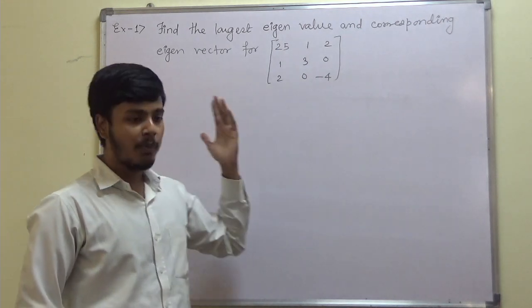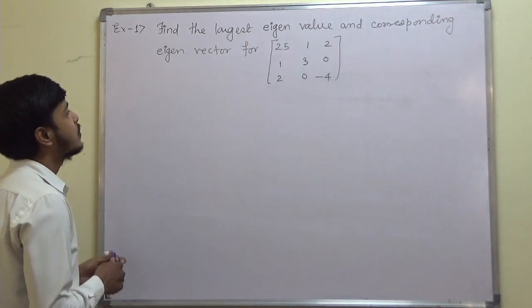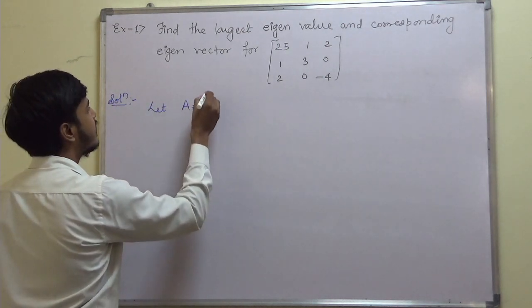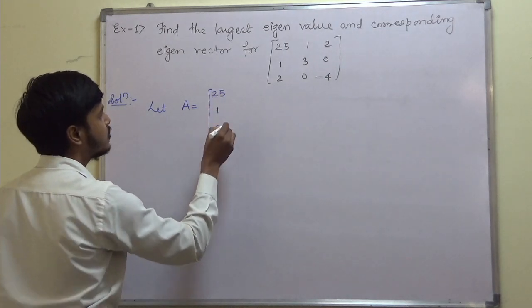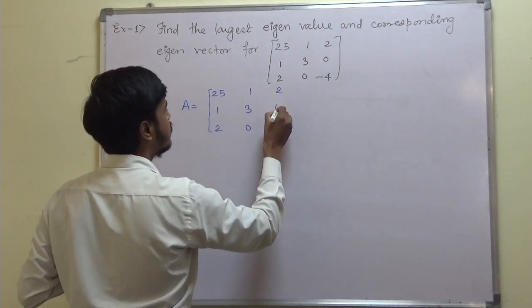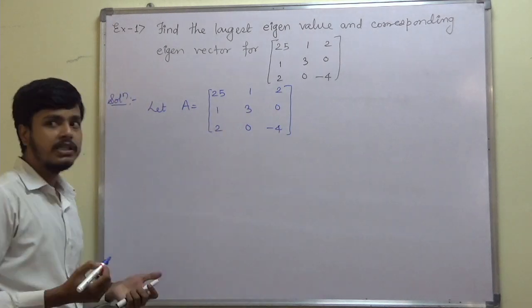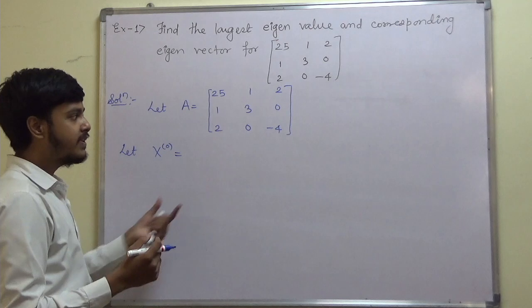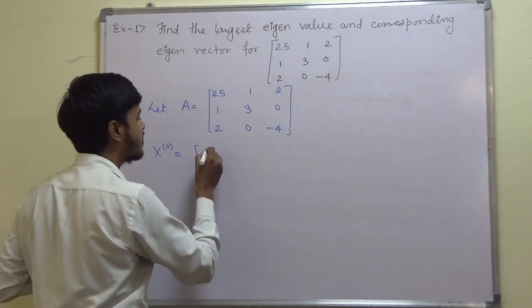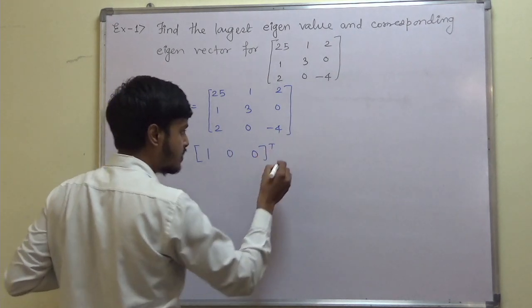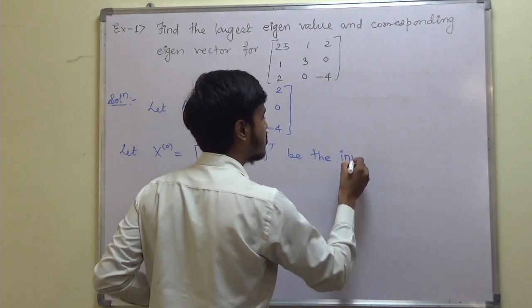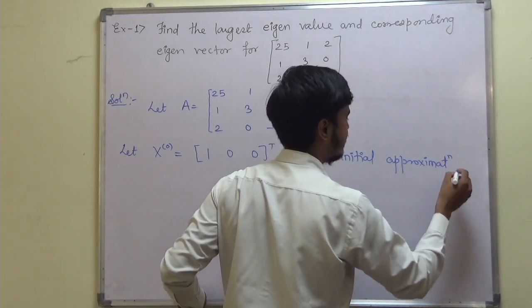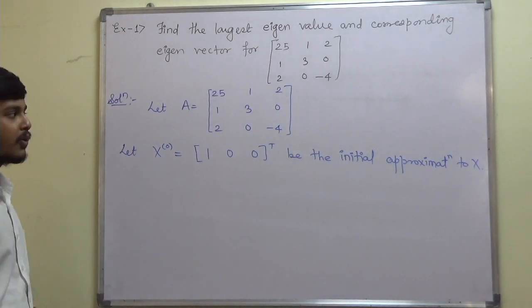We are going to start with this problem and follow the method. Let A equal to the matrix [25, 1, 2; 1, 3, 0; 2, 0, -4]. After writing down the given matrix, you have to start with the initial approximation. Let x₀ = [1, 0, 0]ᵀ be the initial approximation to x, where x is the eigenvector.